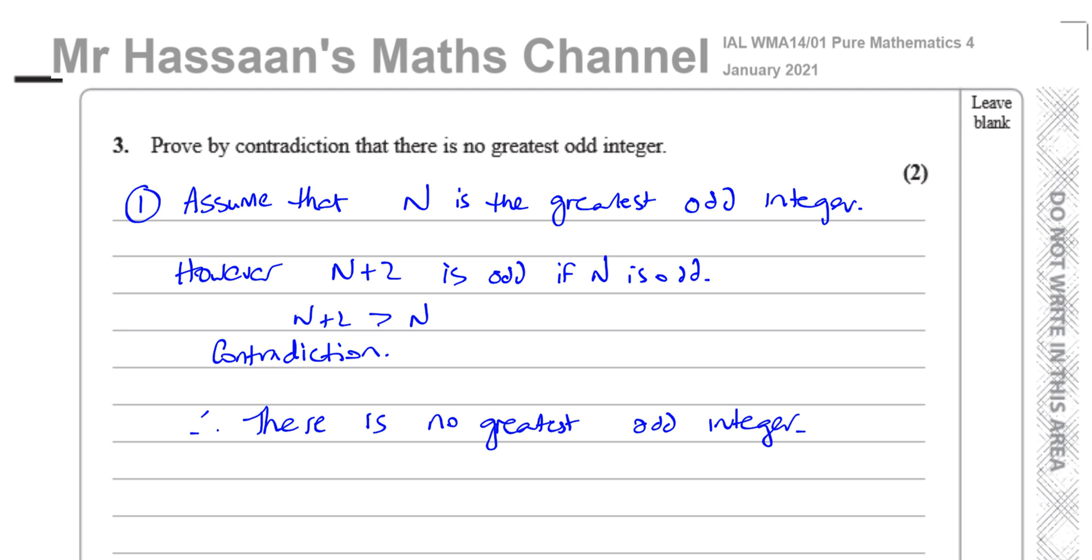So we first assumed that it was the greatest. We assumed the opposite. We assumed that n is the greatest odd integer, assuming the opposite of what we have to prove. And then we showed that it led to a contradiction. And we gave our conclusion. We should always give a conclusion as well. So you need to assume the opposite of what's been said in the beginning. And then we have to show there's a contradiction. And then we have to state, basically what we're showing, that there is no greatest odd integer. We have to state the thing that we proved.